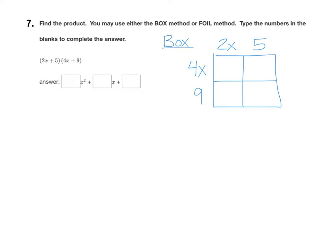Multiply your numbers. 4 times 2, that's 8. And then an x times an x is an x squared. Then for the next one, this box, we do a 4x times 5. 4x times 5 is 20x.